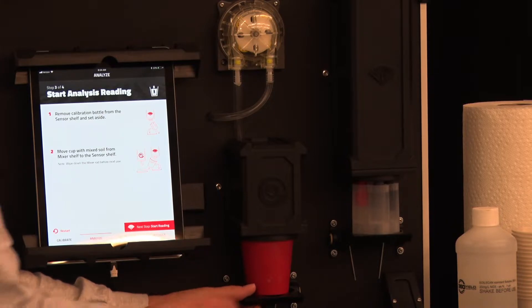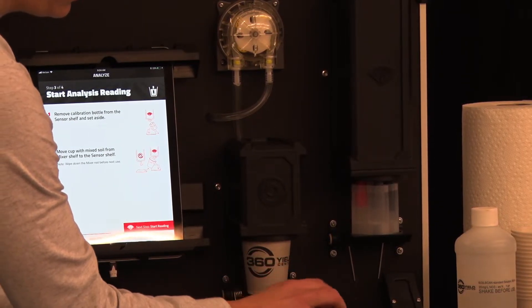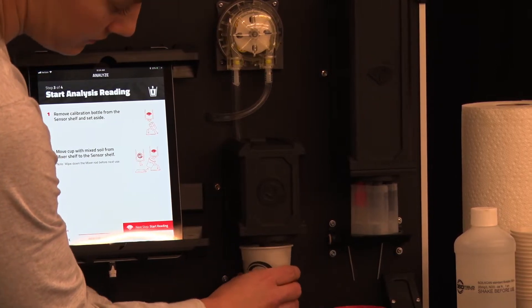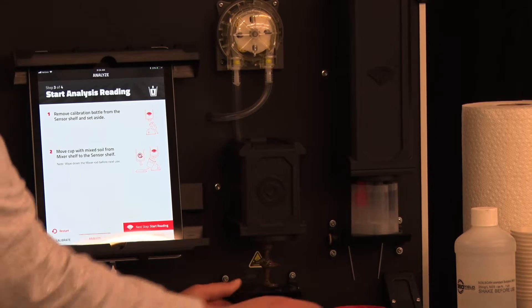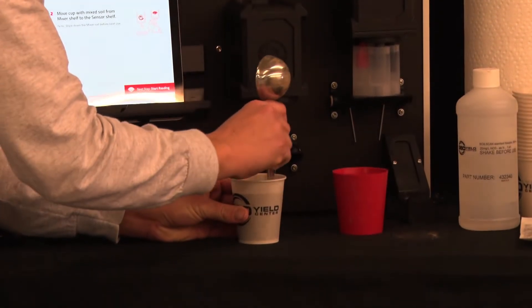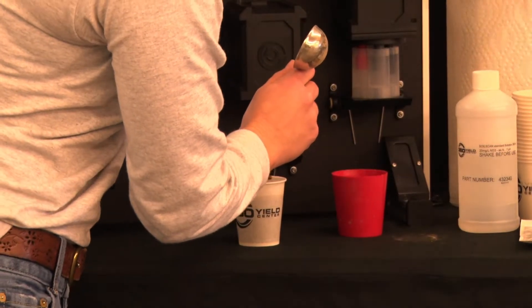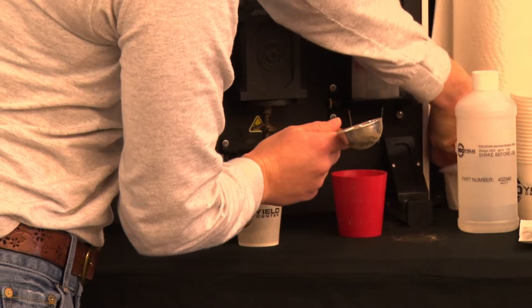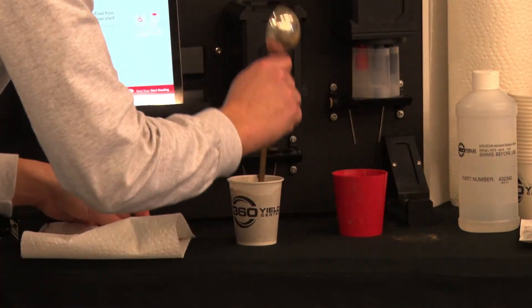What you need to do is remove the mixing cup and ensure that all of the soil has been mixed well together. I use the handle of the soil scoop. This will ensure that you get an accurate reading.